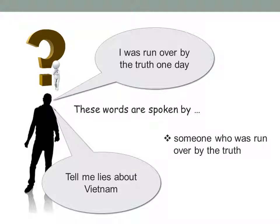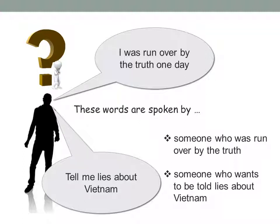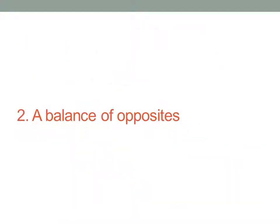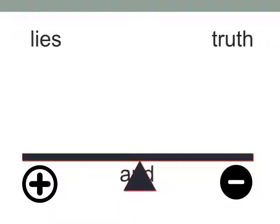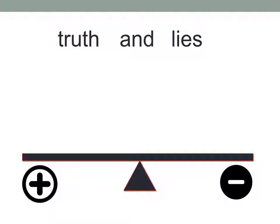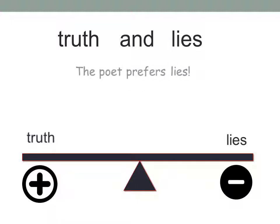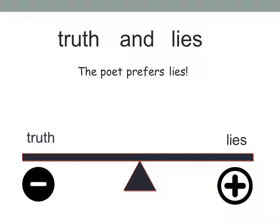'Tell me lies about Vietnam' — these words are spoken by someone who wants to be told lies about Vietnam. Keep it simple. Next, the balance of opposites in the poem: we've got lies and truth. Normally truth is positive and lies are negative, but in this poem the poet actually prefers lies — 'Tell me lies about Vietnam' — so it twists the normal assumption on its head. Truth becomes the negative thing and lies become the positive thing.